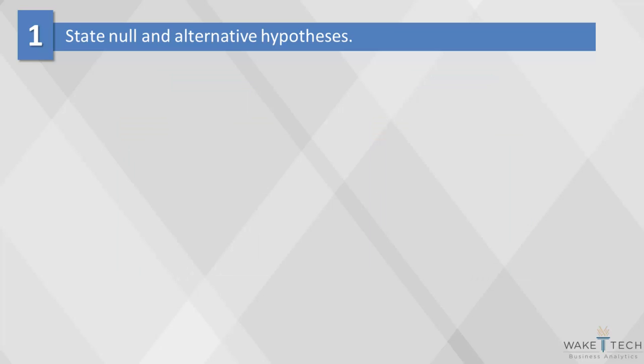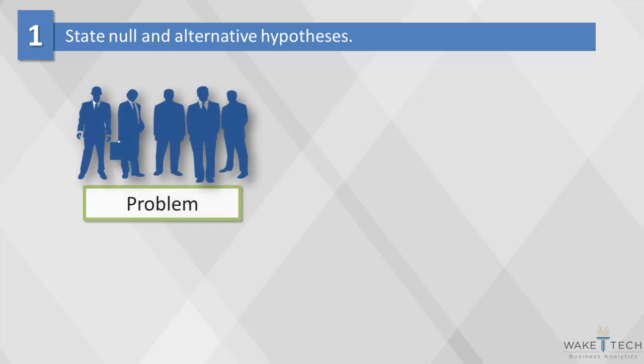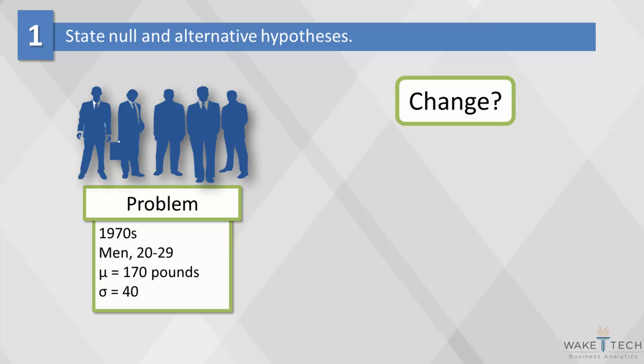Here's an example of setting up the null and alternative hypotheses. In the late 1970s, the weight of US men between 20 and 29 years of age had a log normal distribution with a mean of 170 pounds and a standard deviation of 40 pounds. To illustrate the hypothesis testing procedure, we ask if body weight in this group has changed since 1970. This is called our research question, and it can be answered in one of two ways.